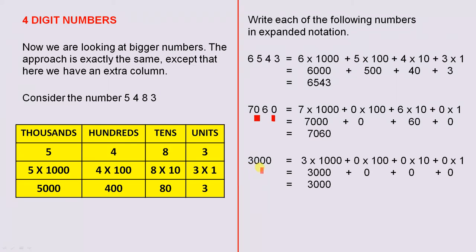And finally, 3,000. 3 times 1,000 plus 0 times 100 plus 0 times 10 plus 0 times 1. 3,000 plus 0 plus 0 plus 0 is 3,000.